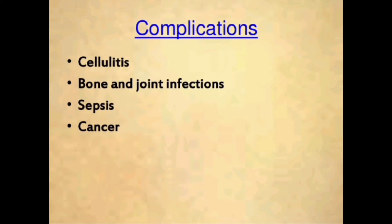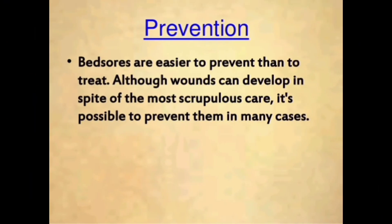Next, the complications. First is cellulitis — inflammation of subcutaneous connective tissue. Second is bone and joint infections. Third is sepsis — a serious condition resulting from the presence of harmful microorganisms in the blood or other tissues. Last is cancer — a disease caused by an uncontrolled division of abnormal cells in a part of the body.